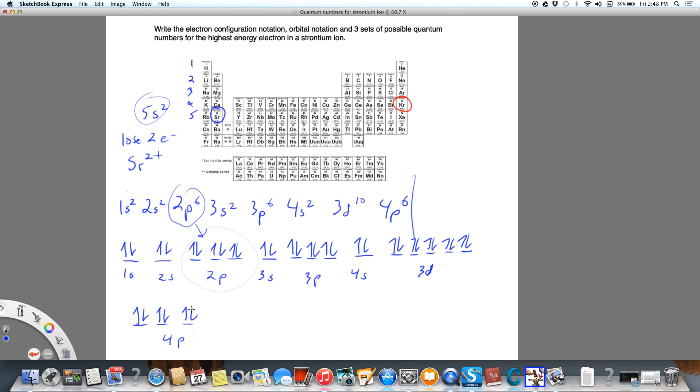Which is also the orbital notation for the strontium ion, which would also be the orbital notation for the bromide ion. So keep in mind that bromide, krypton, strontium, the selenide ion, the arsenide ion, these are isoelectronic, so they would all have the same electron configuration and orbital notation.